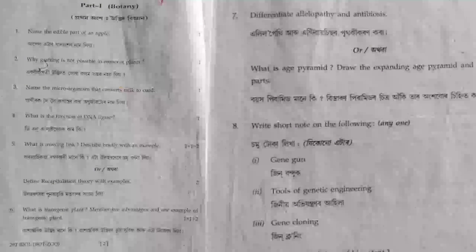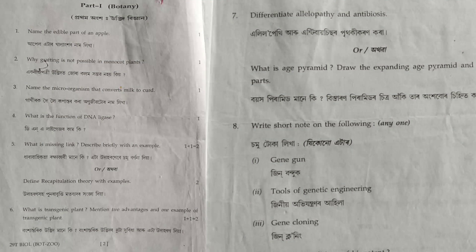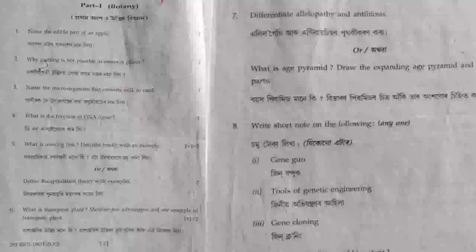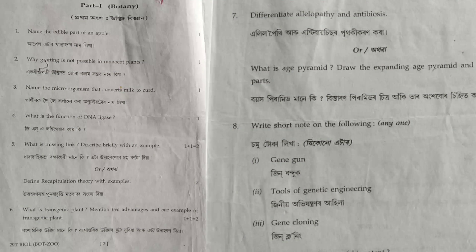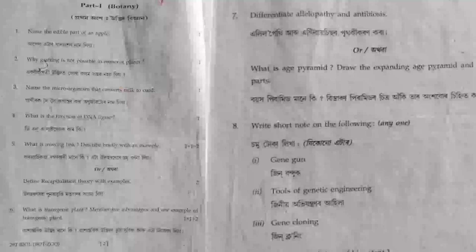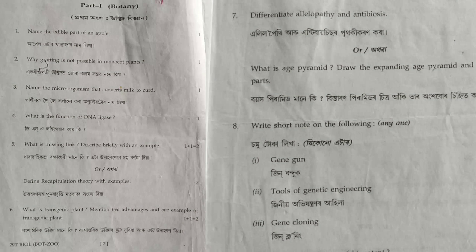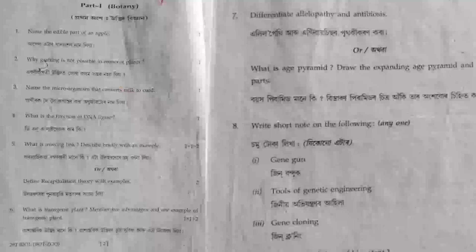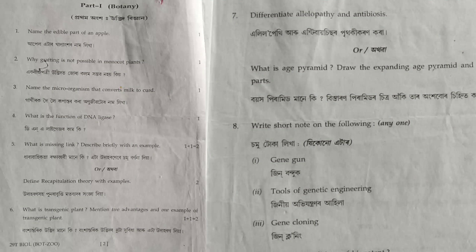Next question: what is an age pyramid? Draw the expanding age pyramid and label its parts. An age pyramid means the geometrical representation of different age groups present in a population. You also have to draw the expanding age pyramid. Next question: write a short note on the gene gun. The gene gun is a bioballistic device used to transfer genes to a recombinant cell.